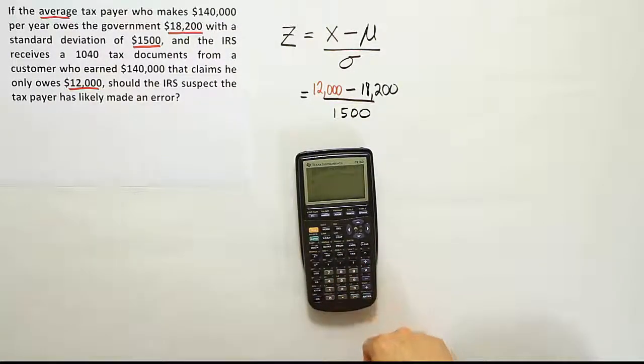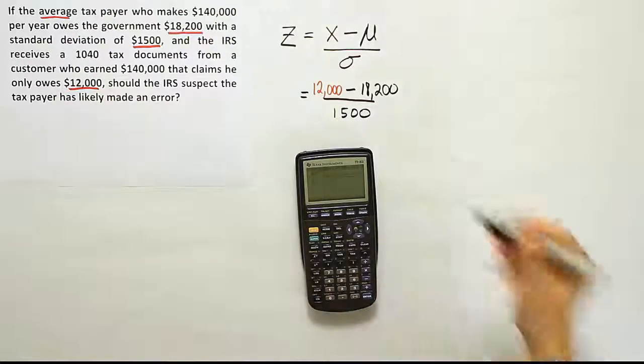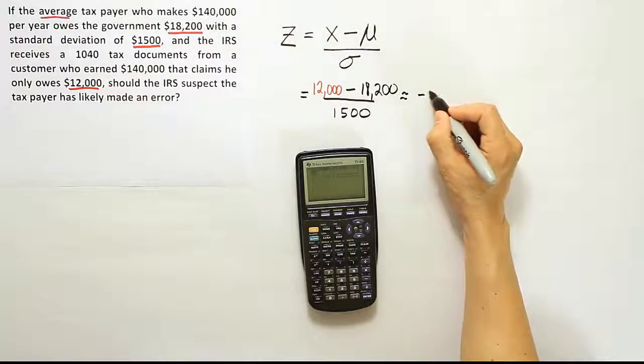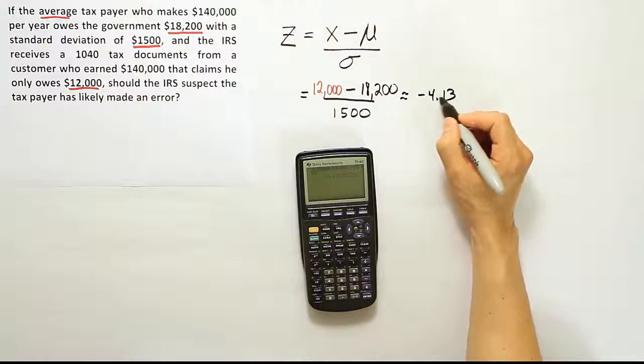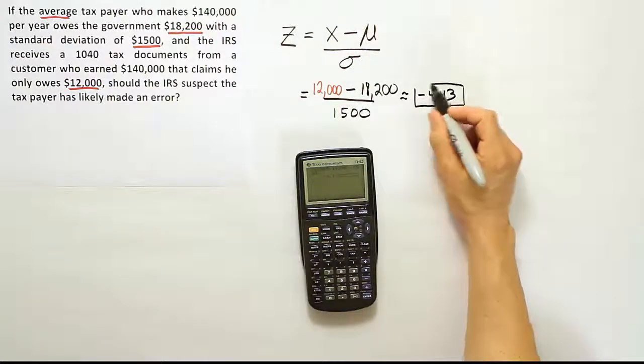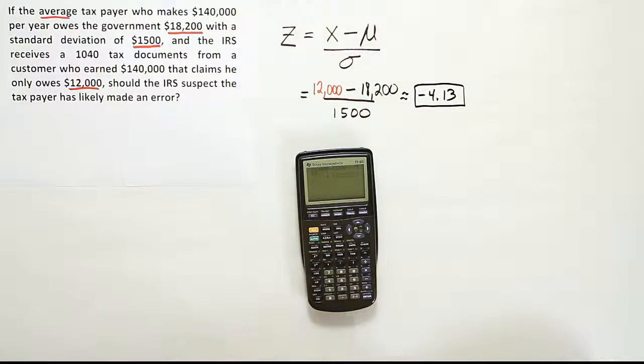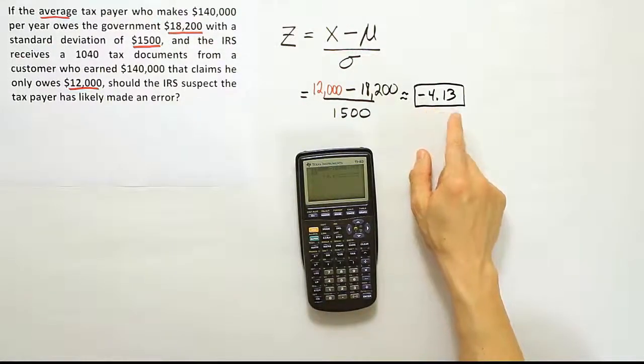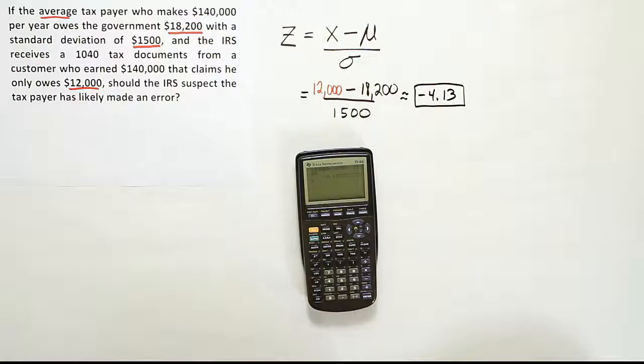And we end up with negative 4.13. So I've rounded it a little bit because the 3 repeats after that. So either way, it's negative 4.13 standard deviations away from the mean.